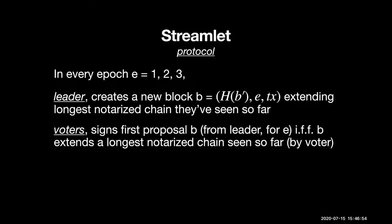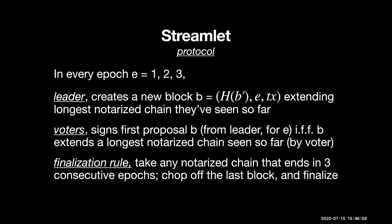The core of the protocol is the finalization rule. When we have a notarized chain with at least three consecutive epochs — say five, six, seven — we ignore the last block and finalize the chain up to the penultimate block. So if a chain has epochs five, six, seven, we finalize up through six.